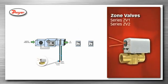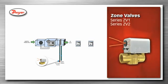VAV systems can include heating coils of hot water that the air flows past to heat the air up. Zone valves, series ZV1 or ZV2, are used to change the amount of hot water added to the heating coil, changing the air temperature.